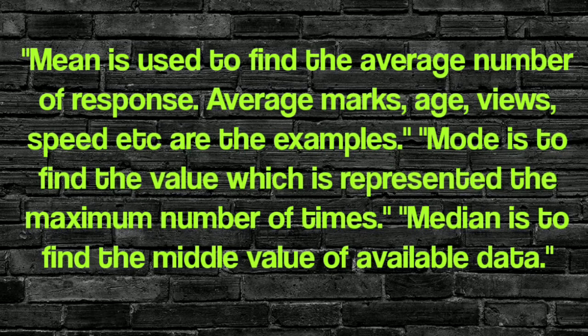The third one is mean. The mean is used to find the average number of responses — average mark, age, views, speed, etc. can be calculated. It is a measure of central tendency such as mean, median, and mode. Median is used to find the middle value of available data. Mode is to find the value which is repeated the maximum number of times.